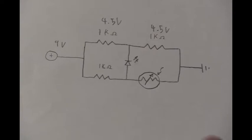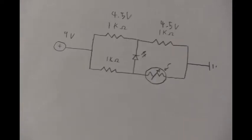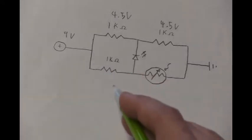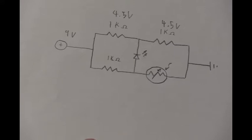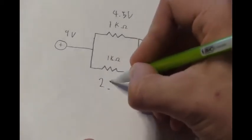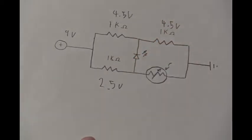Then with the variable photoresistor, as the resistance increases the voltage drop on the third 1 kiloohm resistor will decrease. So we can say that's about a 2.5 volt voltage drop.